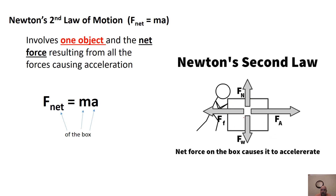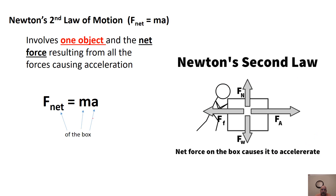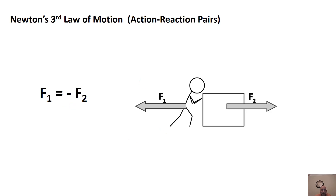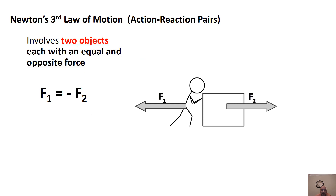The box has different forces: weight down, normal force up from the ground, an applied force from the stick figure, and friction pushing back. If there's a net force — and it looks like the applied force is a bit bigger — that creates an acceleration on the box. Newton's third law, on the other hand, deals with action-reaction pairs between two objects.